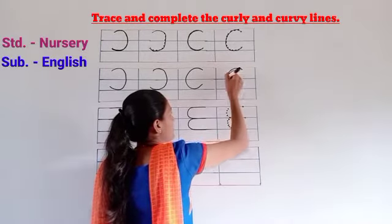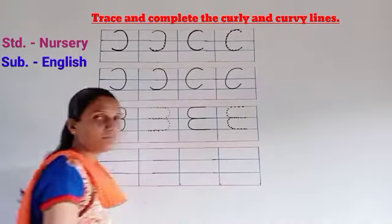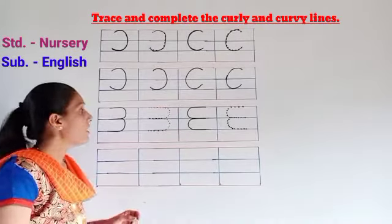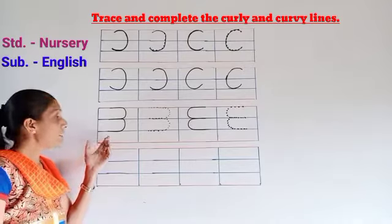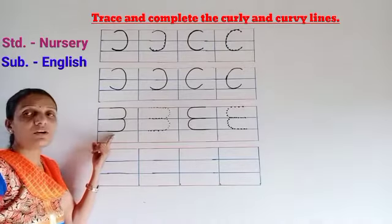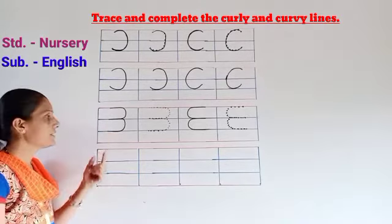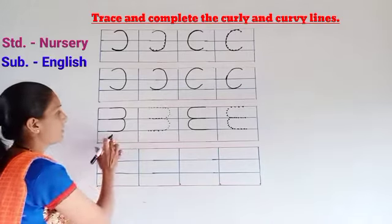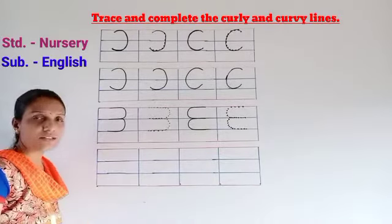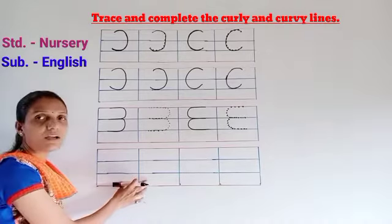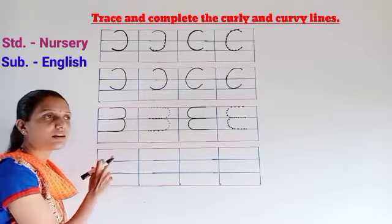Is it complete? Now, next is what we call the Curly Line. Which line? Curly. So here you can see the small dots. First we press and then we complete it. Which line? Curly line.